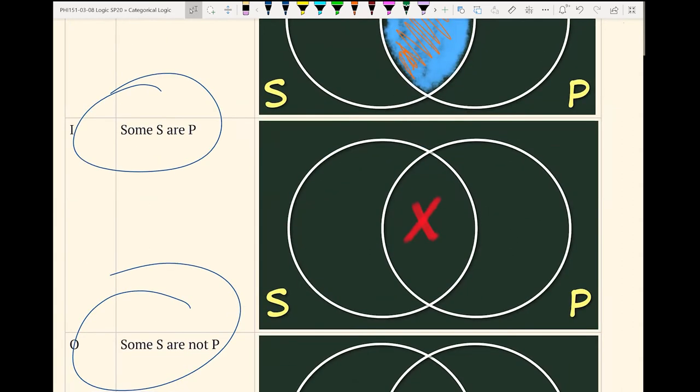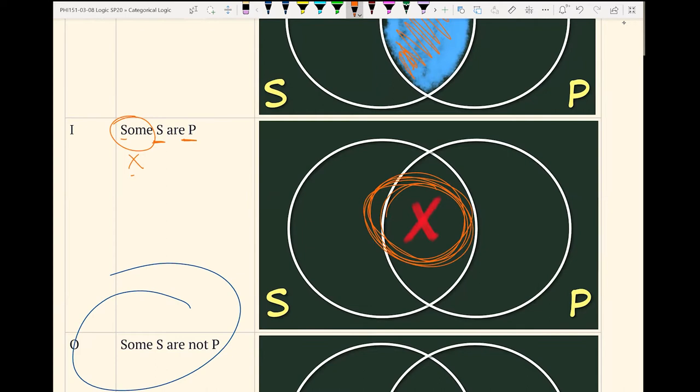Then we move on to I. All we want to do is say that at least one thing exists. So that's going to be an X. And where's that X is going to go? Well, this X is a member of both S and P. And so it's going to go right here in the middle.